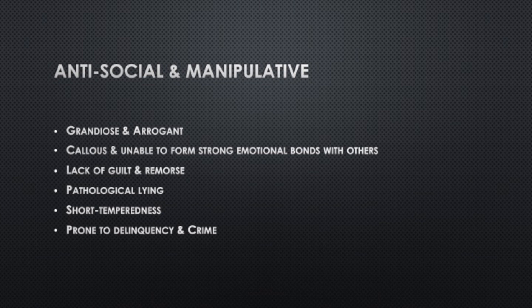A typical psychopath is antisocial and manipulative. Psychopaths usually have a very grandiose sense of self and are very arrogant. They can be totally callous and are usually unable to form strong emotional bonds with others. So basically this whole concept of emotional bonding, true compassion is something they totally lack. They also lack guilt and remorse. This is why they can do things without feeling bad afterwards or feeling guilty. Pretty often they also have a lack of anxiety or fear. Further, psychopaths are usually pathological liars. They have a very short temperedness and are prone to delinquency and crime.